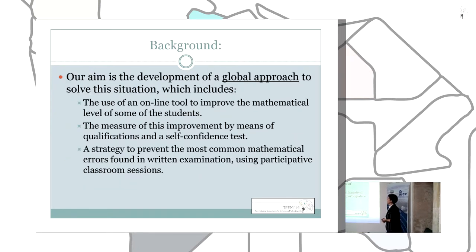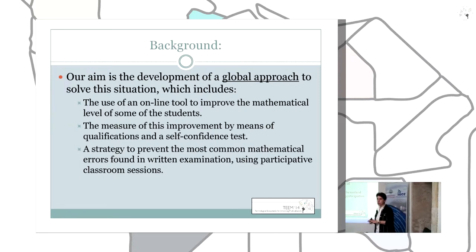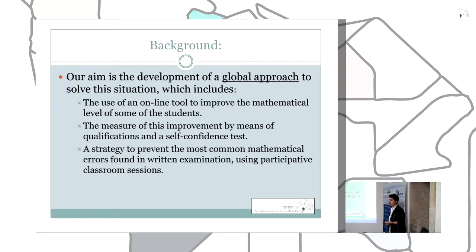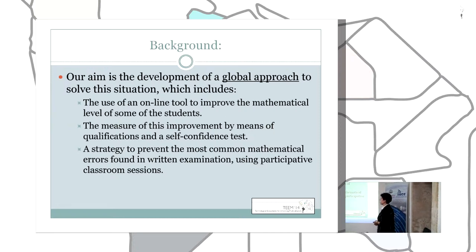We want to develop our global approach to solve this situation. This global approach includes various parts. One of them is the use of an online tool to improve the mathematical level of a specific group of students. The effectiveness of this is measured by means of a self-confidence test and the students' qualifications, and also a strategy to prevent the most common mathematical errors found in written examinations, using a participative classroom session methodology.